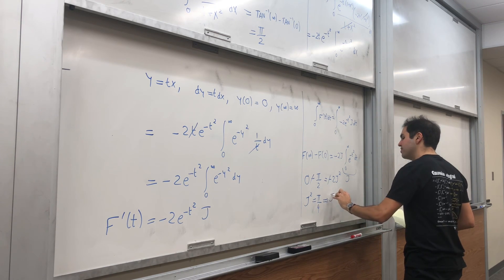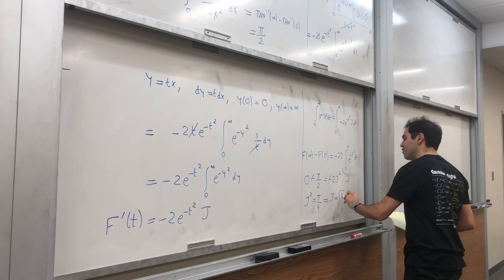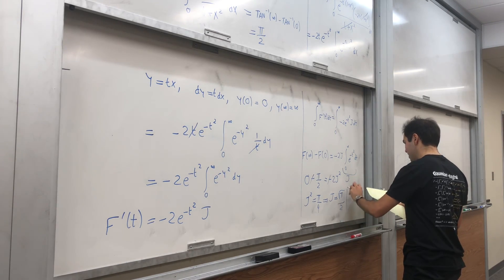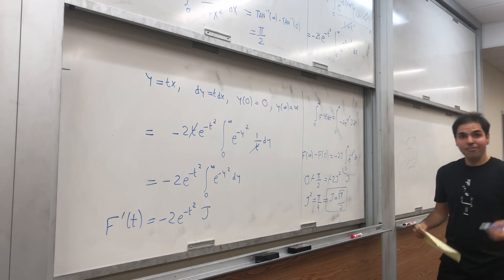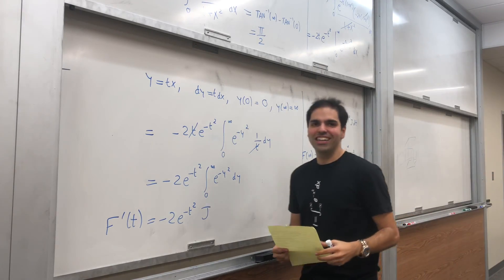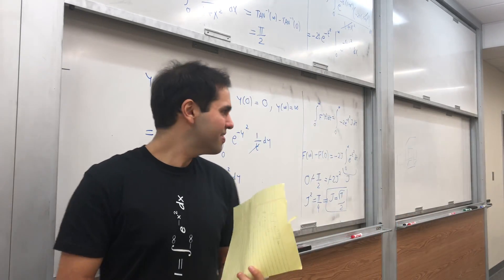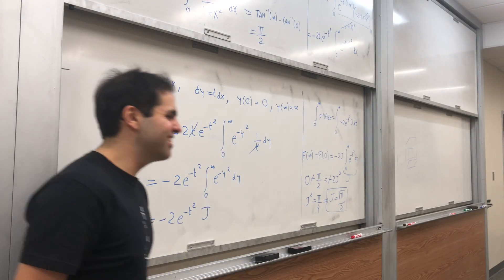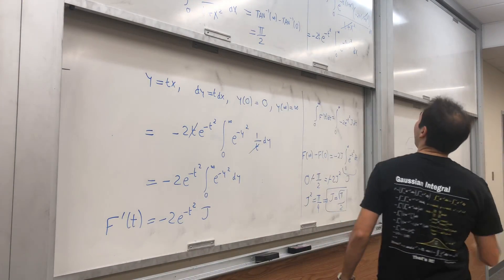And again, J is positive, so J is square root of pi over two, which is yet another way of finding the Gaussian integral. How cool is that? So again,